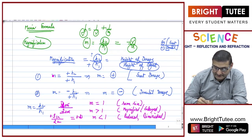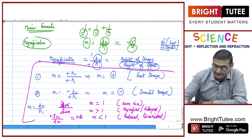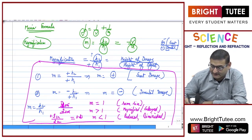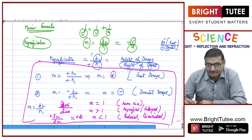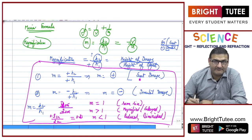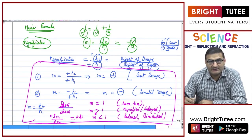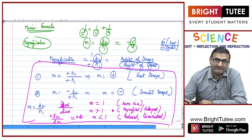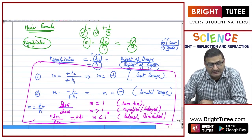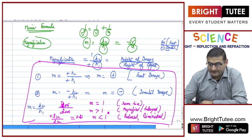These are very important points. Magnification positive means erect image; magnification negative means inverted image; magnification equal to 1 means same size image; magnification greater than 1 means enlarged image; and magnification less than 1 means diminished image.